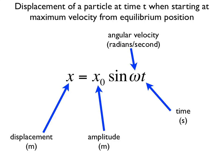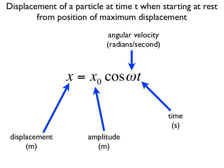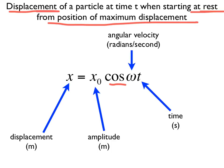This equation gives the displacement of a particle at time t when starting at maximum velocity from the equilibrium position — the clock starts as the mass passes through equilibrium. You need the angular velocity in radians per second, the elapsed time, and the amplitude (the maximum displacement). The next equation looks almost the same except it has a cosine instead of sine, and is used for finding the displacement when starting at rest from the position of maximum displacement — the stopwatch starts when the mass reaches its maximum positive displacement.